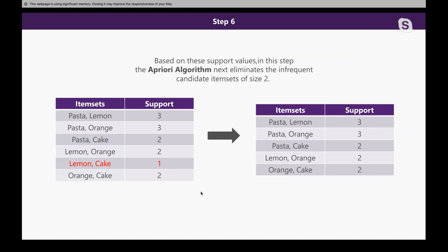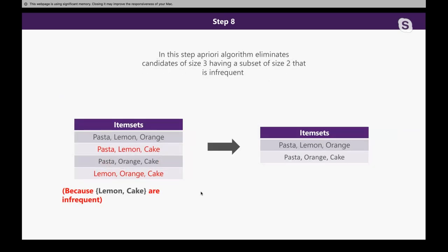The new table shows: pasta-lemon with support three, pasta-orange with support three, pasta-cake with support two, lemon-orange with support two, and orange-cake with support two. We take those support values equal to or greater than our minimum support. In step eight, we check again for infrequent subsets. This time we find two infrequent subsets: pasta-lemon-cake and lemon-orange-cake, because lemon-cake is infrequent. We cut these and get two item sets: pasta-lemon-orange and pasta-orange-cake.